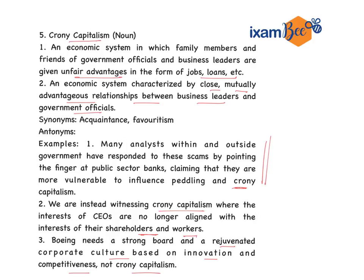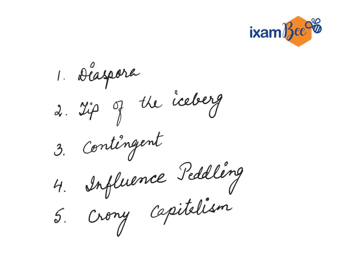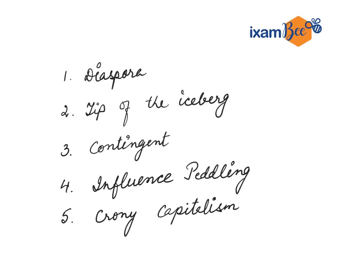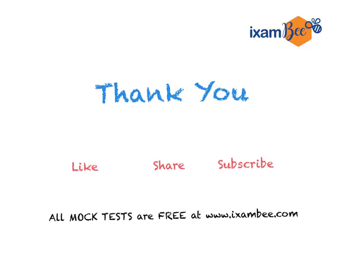These were today's five words. Let us quickly revise: first, diaspora; second, tip of the iceberg — an idiom; third, contingent — which can be used both as a noun and an adjective; fourth, influence peddling; and fifth, crony capitalism. I would like to thank you, and if you liked the video, please press the like button, share it with your friends, and subscribe to our channel to get all updates. All mock tests are free at www.iexambi.com. Thank you friends, thanks for watching.